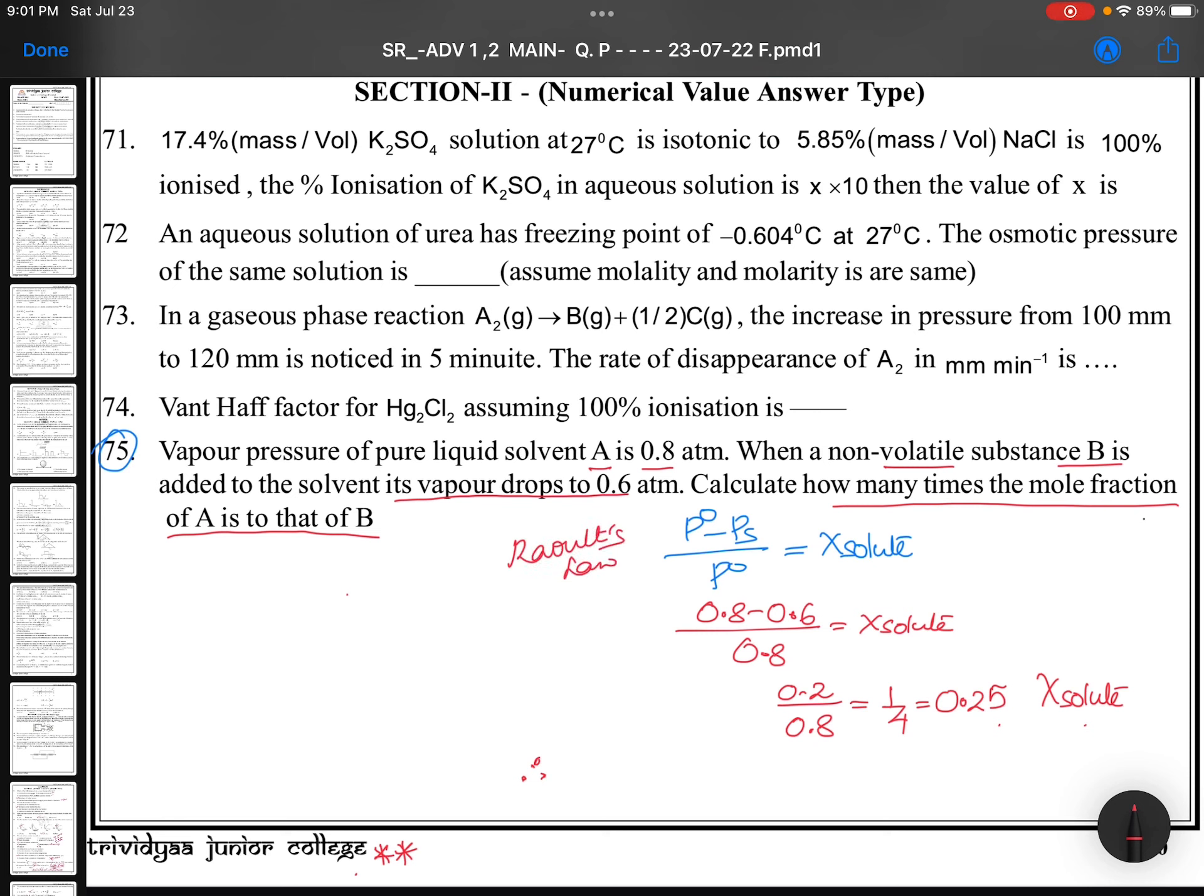(P⁰ - Ps) / P⁰ equals mole fraction of solute. P⁰ is 0.8, Ps is 0.6. So (0.8 - 0.6) / 0.8 equals mole fraction of solute. 0.8 minus 0.6 is 0.2 divided by 0.8.